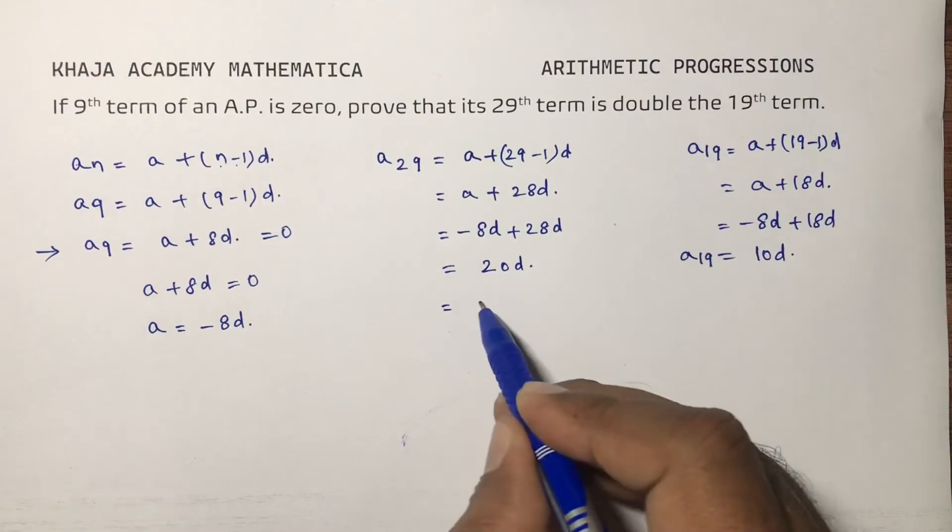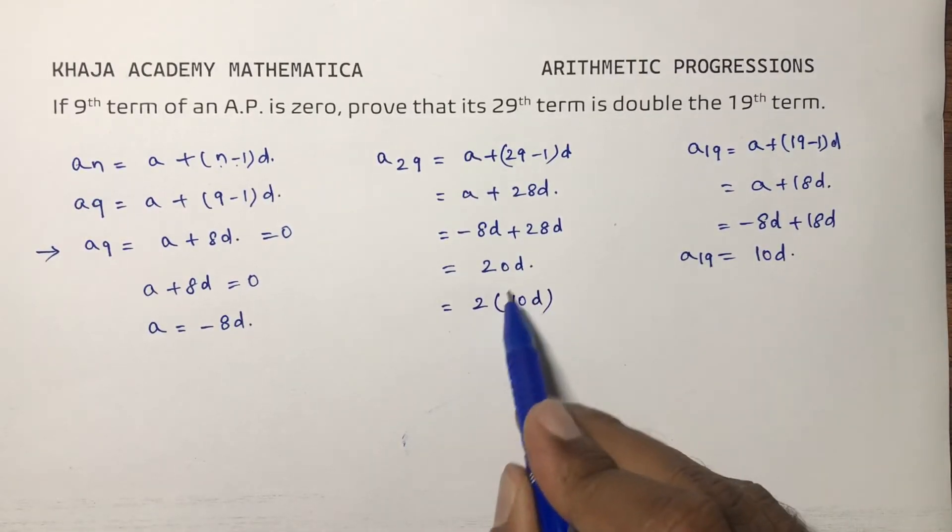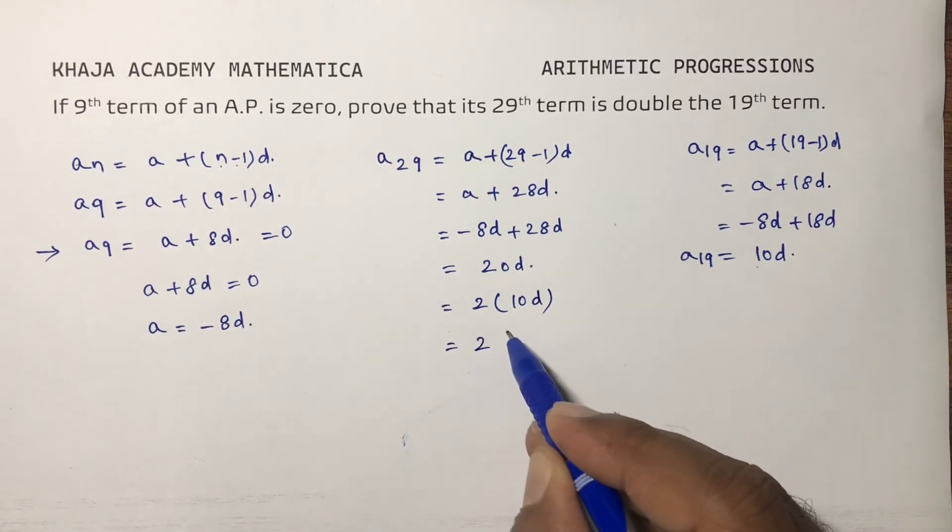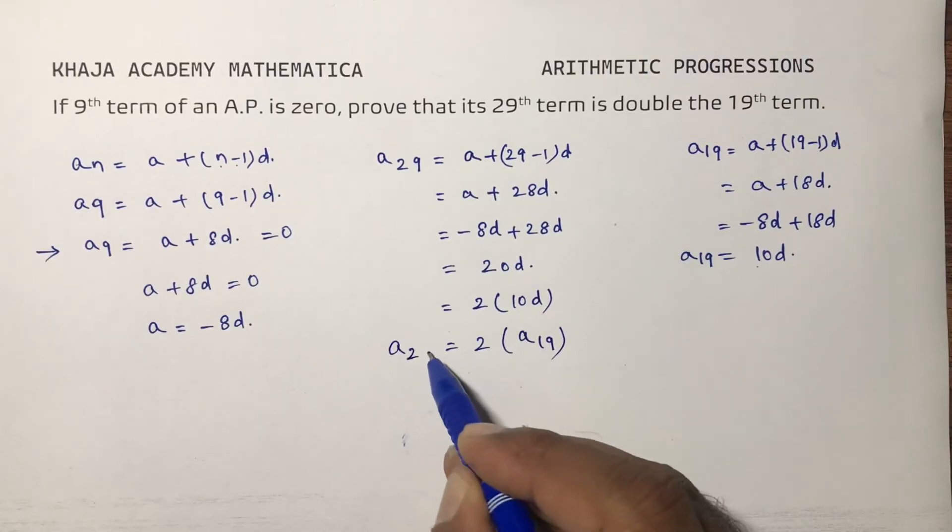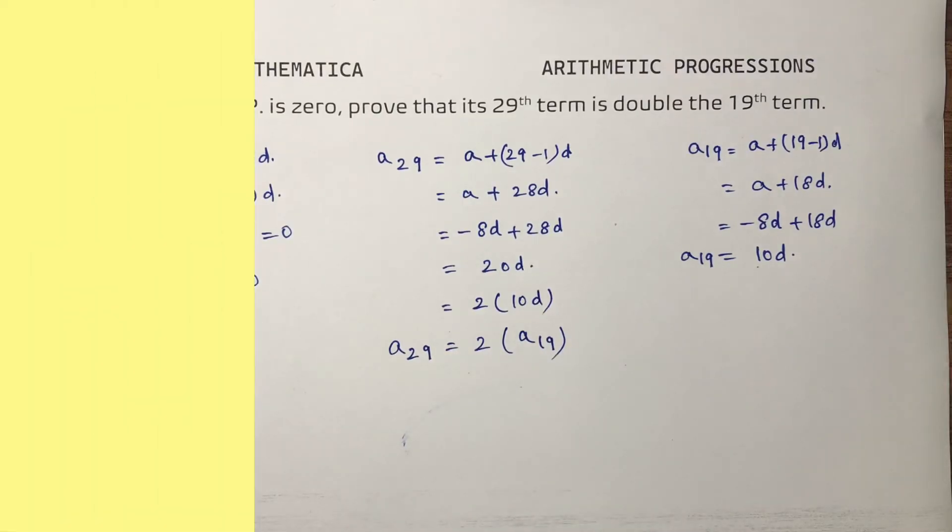This 20 you can write as 2 times 10D. So that in place of 10D, I can write 19th term. So the 29th term is twice, double the 19th term. In this way you have to prove.